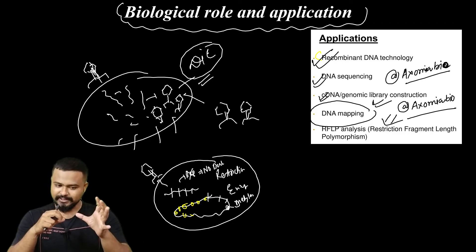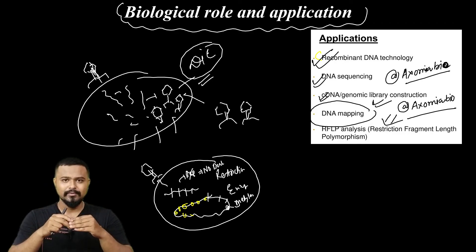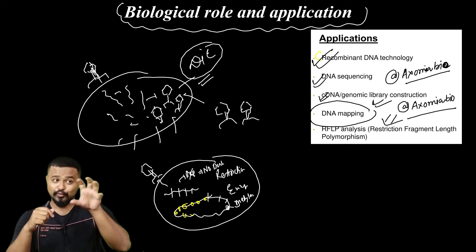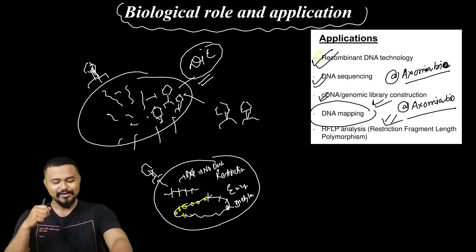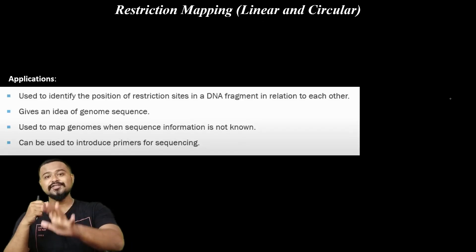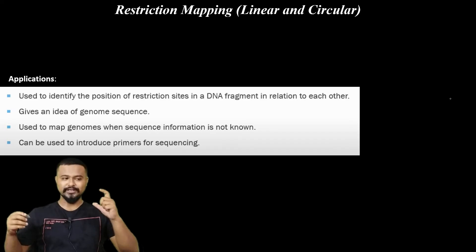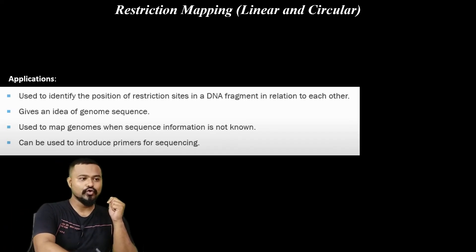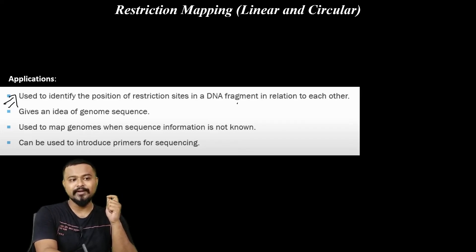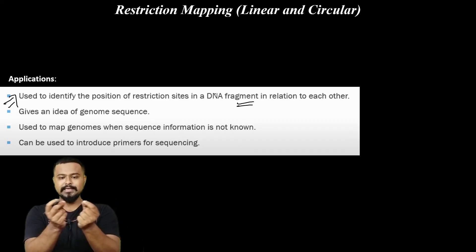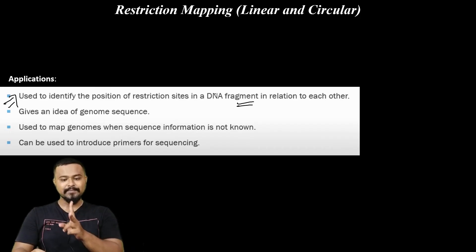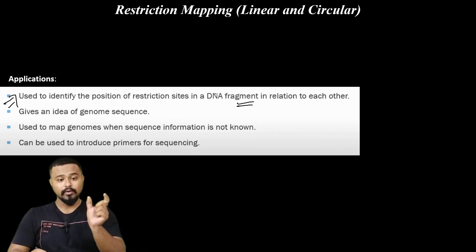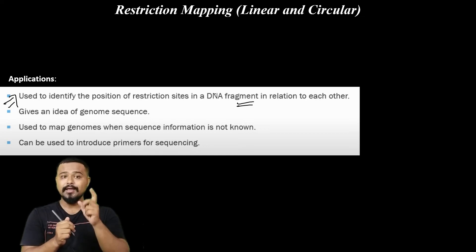Biological role and application is done. Now, restriction mapping — linear and circular. This is an important area. The application of restriction mapping is used to identify the position of restriction sites in a DNA fragment in relation to each other. This is restriction mapping — our restriction enzyme cuts at specific sites, and DNA has many such areas.